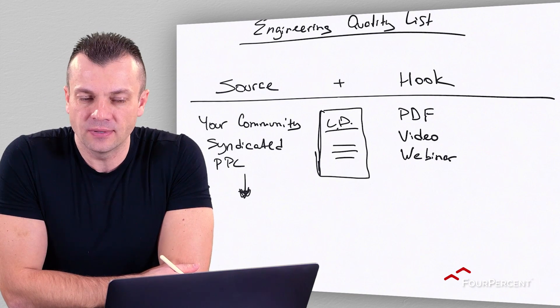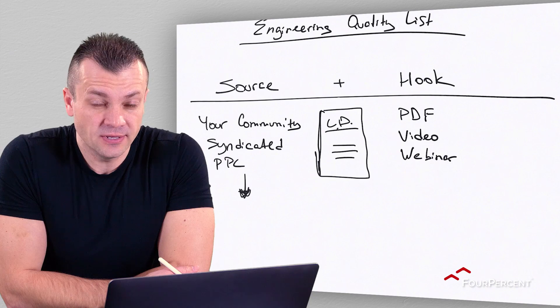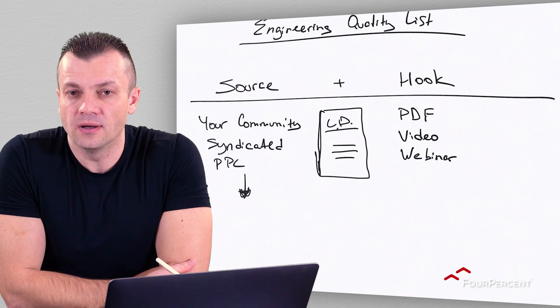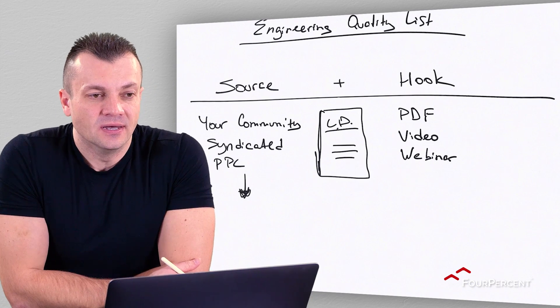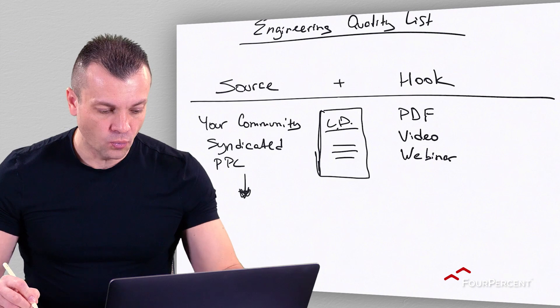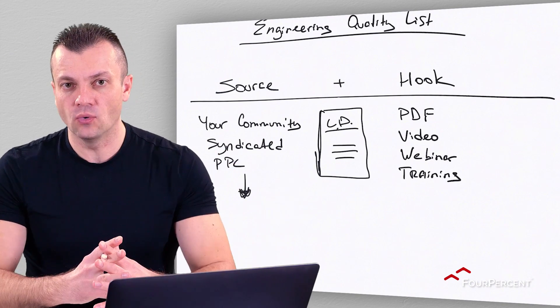A webinar can serve as a hook, and so can a mini course or training you give away. Your hook needs to be really good. If you want a high-quality, engaged list, your hook needs to be on point. People don't buy products — they buy outcomes and representations. If your PDF or hook can speak to both their surface-level and core desires, you have their conscious and subconscious on your side.